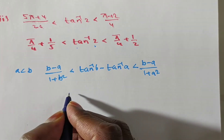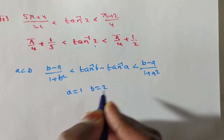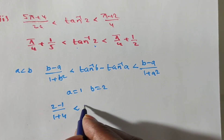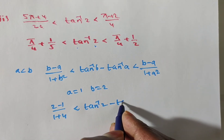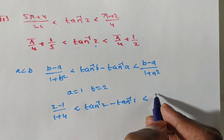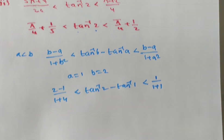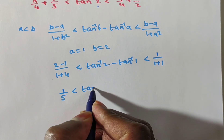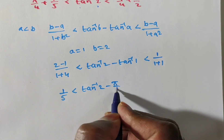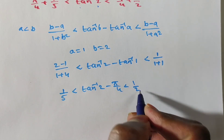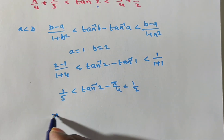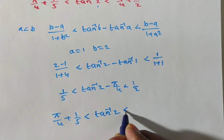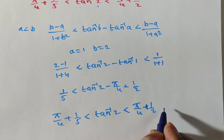Substituting a = 1 and b = 2: (2 minus 1) by (1 plus 2²) = 1/5, and (2 minus 1) by (1 plus 1²) = 1/2. So: 1/5 is less than tan inverse 2 minus tan inverse 1, which is less than 1/2. That means 1/5 is less than tan inverse 2 minus pi/4, which is less than 1/2.